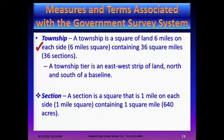Measures and terms associated with the Government Survey System: A township is a square of land 6 miles on each side, containing 36 square miles or 36 sections. A township tier is an east-west strip of land north and south of a baseline. A section is a square that is 1 mile on each side, containing 1 square mile or 640 acres.